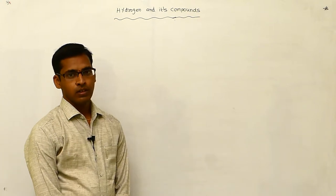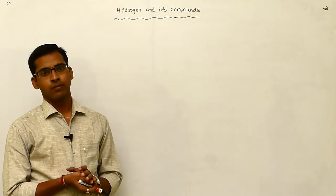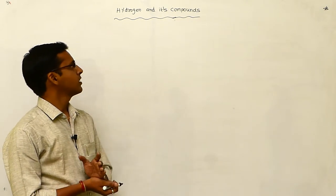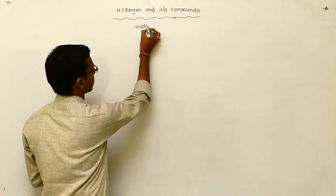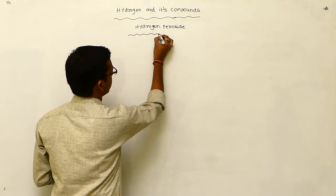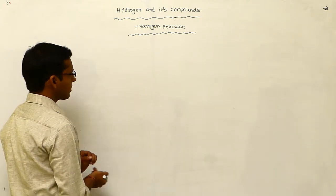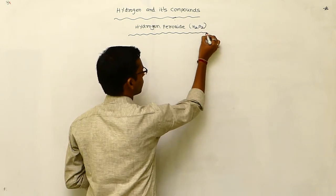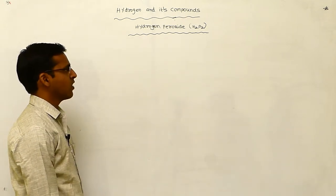In hydrogen and its compounds, the preparation of water, chemical properties of water, and physical properties are completed. The next compound is hydrogen peroxide. The general formula of hydrogen peroxide is H2O2. Generally, the peroxide general formula is O2 minus 2.